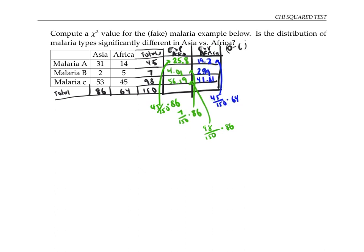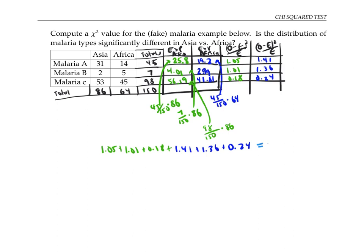Now I'll compute my observed minus expected squared over expected for both Asia and Africa. Adding up all six of these numbers gives me my chi squared value of 5.25. Again, I compute a p value using a tool like chi distribution on the Google spreadsheets, and I have to plug in a degree of freedom. The degree of freedom here will be three minus one times two minus one, since there are three row variables and two column variables. So I put in two times one, which is two for my degrees of freedom. And that gives me a p value of 0.07.